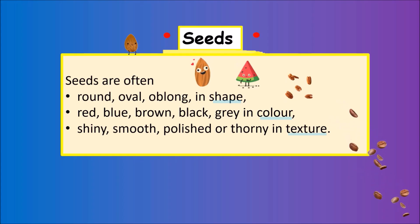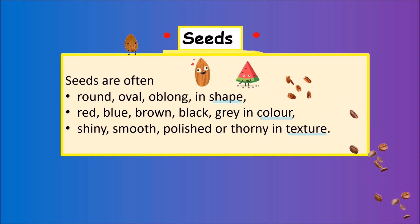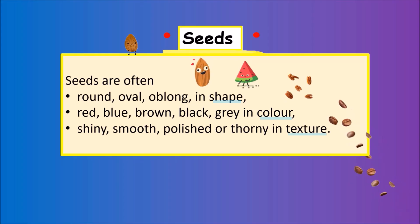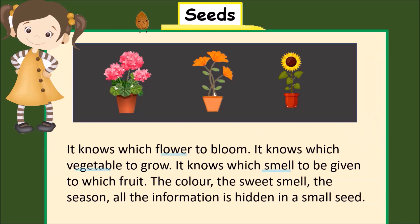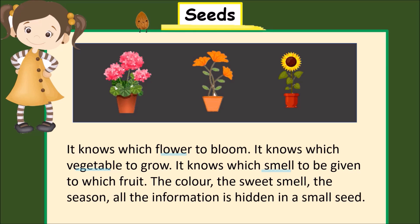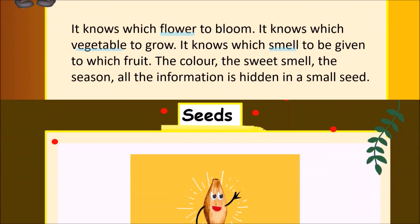They are red, blue, brown, black, or grey in colour. They are shiny, smooth, polished or thorny in texture. Seeds are just amazing. A seed knows which flower to bloom, which vegetable to grow, which smell to give to which fruit — the colour, the sweet smell, the season. All the information is hidden in that small seed.